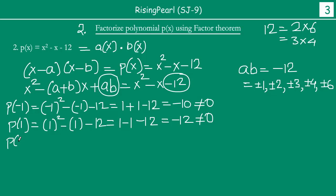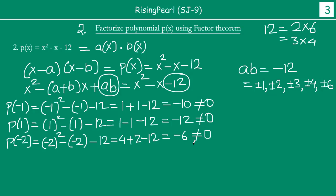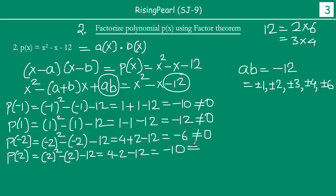Let us take p(−2). We have (−2)² minus (−2) minus 12, which gives plus 4 plus 2 minus 12, equalling minus 6. Still not equal to 0. Now let us try p(2). At p(2) we get 2 squared minus 2 minus 12, so 4 minus 2 minus 12, which gives 2 minus 12, equalling minus 10. Also not equal to 0. So after four trial values, we have still not found even the first factor.